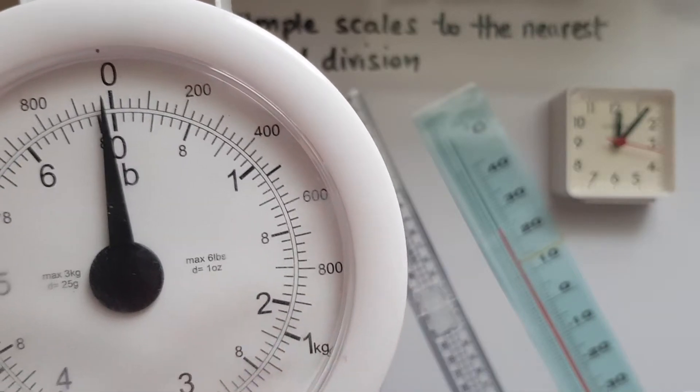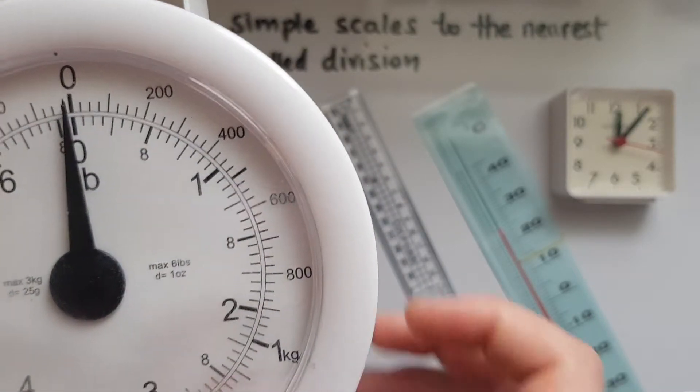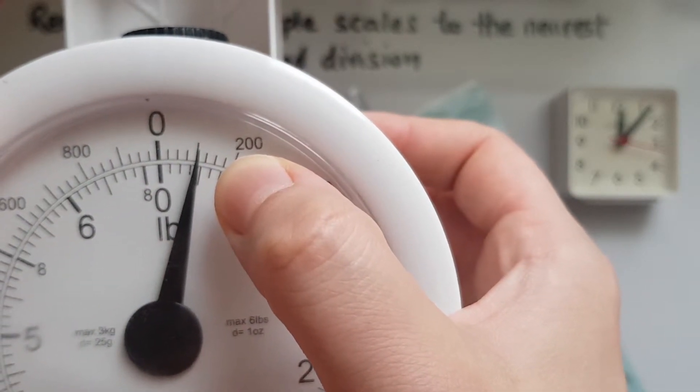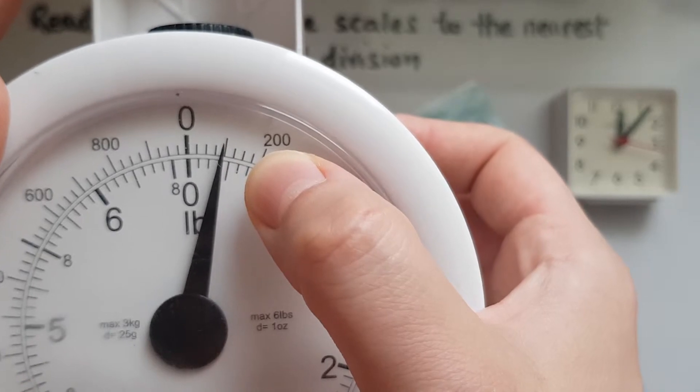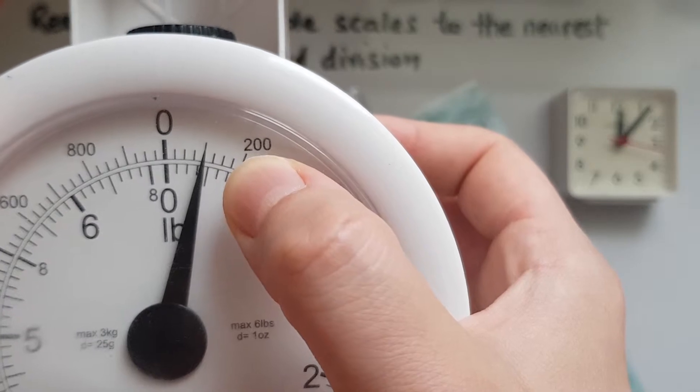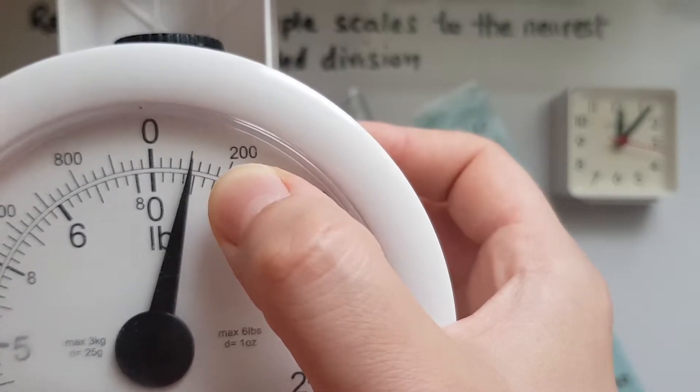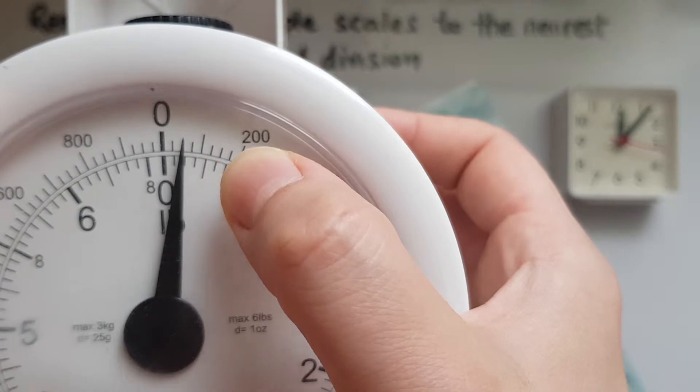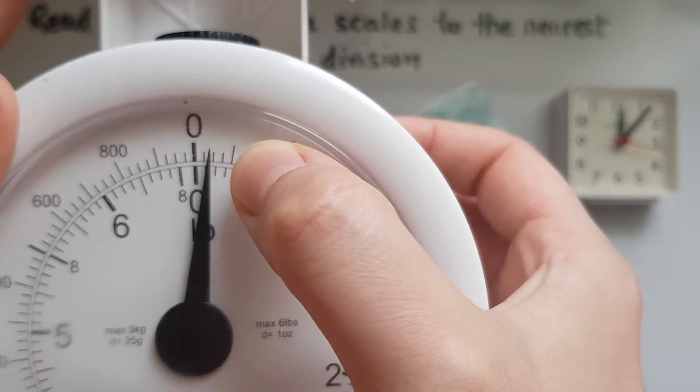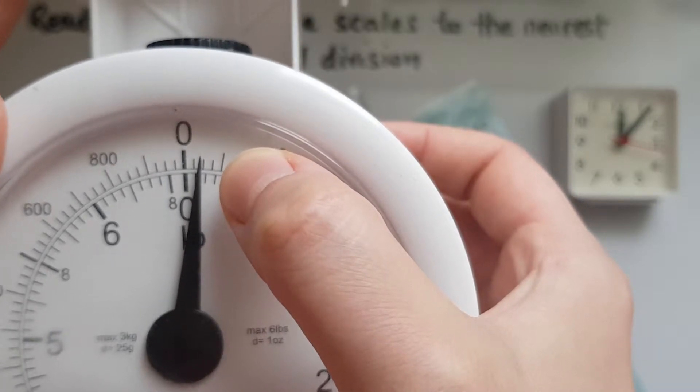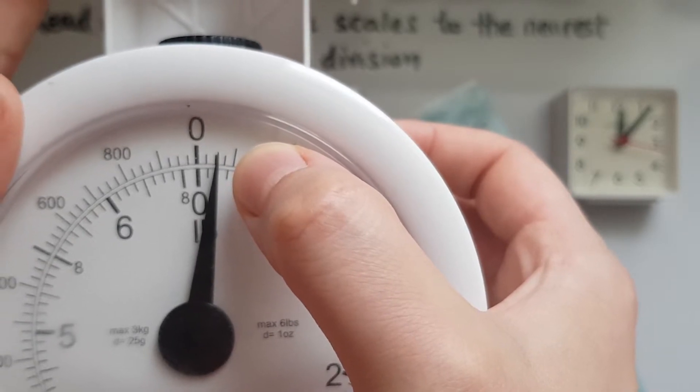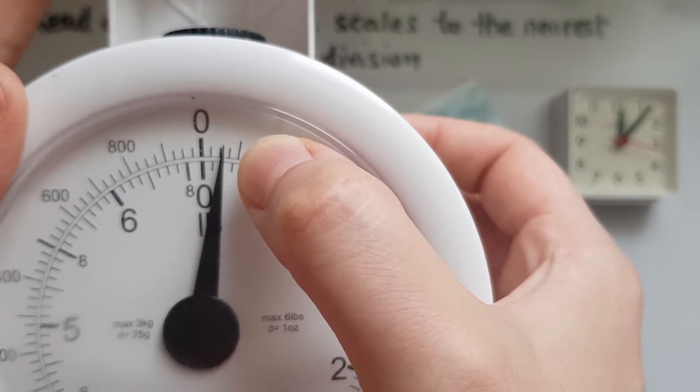So 0 and 200, there is a line between them which is slightly longer. So that must be 100 because 100 is halfway between 0 and 200. Then halfway between these two, between 0 and 100, must be 50. So this line in the middle, right in between them two, is 50.